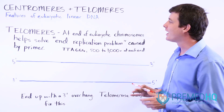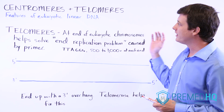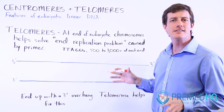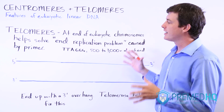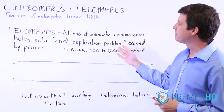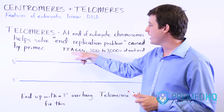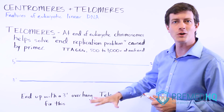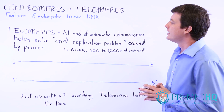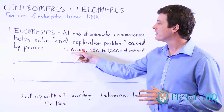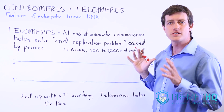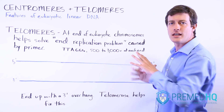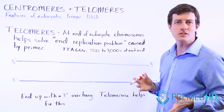Telomeres are another highly conserved sequence in eukaryotic chromosomes, and they exist for a different reason than the centromere. The telomere is a repeated sequence of TTAAGG. This is conserved throughout species and throughout the evolutionary tree. There is simply a sequence that repeats itself 500 to 3,000 times at each end of a eukaryotic chromosome.